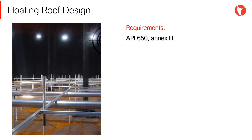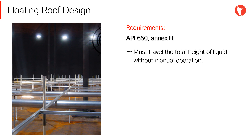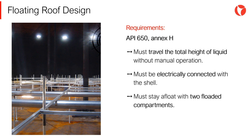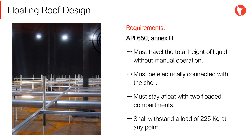The design of internal floating roofs must comply with the requirements of Annex H of the API 650 code. Some of the main requirements are: the roof must travel the total height of the liquid without manual operation; it must be electrically connected with the shell; the roof must stay afloat with two flooded compartments; and the roof shall withstand a load of 225 kg at any point.